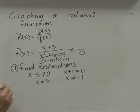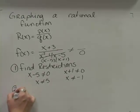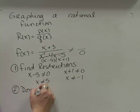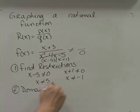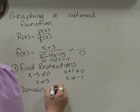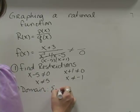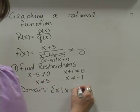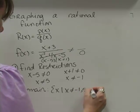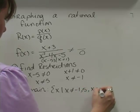From my restrictions, I build my domain. The domain for this function is going to be any real number except for 5 and negative 1. So my domain is x such that x does not equal negative 1 or 5 — any other real number is allowed, with the exception of those two.